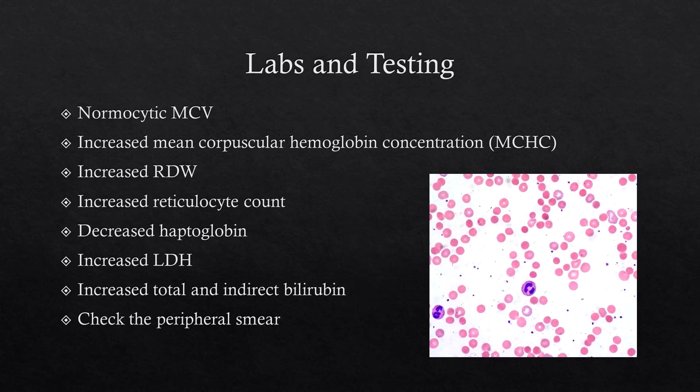Increased LDH — lactic dehydrogenase — is also a marker for hemolysis. Because it's a hemolytic anemia, you get extra bilirubin from heme metabolism, so total and indirect bilirubin are both increased, which causes the jaundice we discussed. Always check the peripheral smear — you'll see many spherocytes with essentially no central pallor. A smear with a lot of empty space between cells indicates the patient is severely anemic, with hemoglobin likely around five or lower.